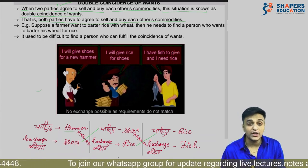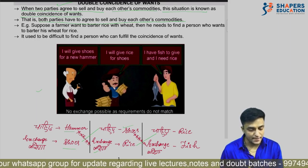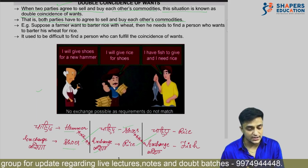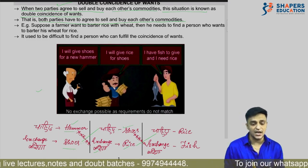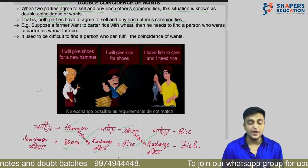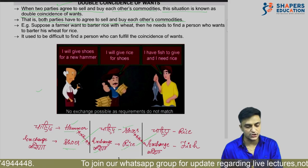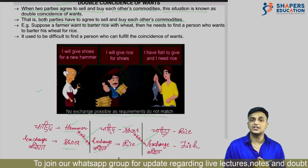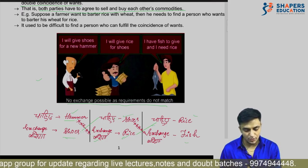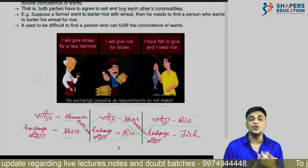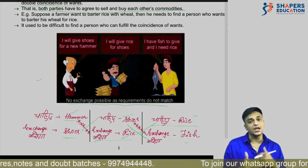For example: one person wants shoes and can exchange a hammer; another wants shoes and can exchange rice. Here, both parties need shoes, but one has a hammer and the other has rice — neither has what the other wants. So there is a lack of double coincidence of wants, meaning no exchange is possible because the requirements don't match.